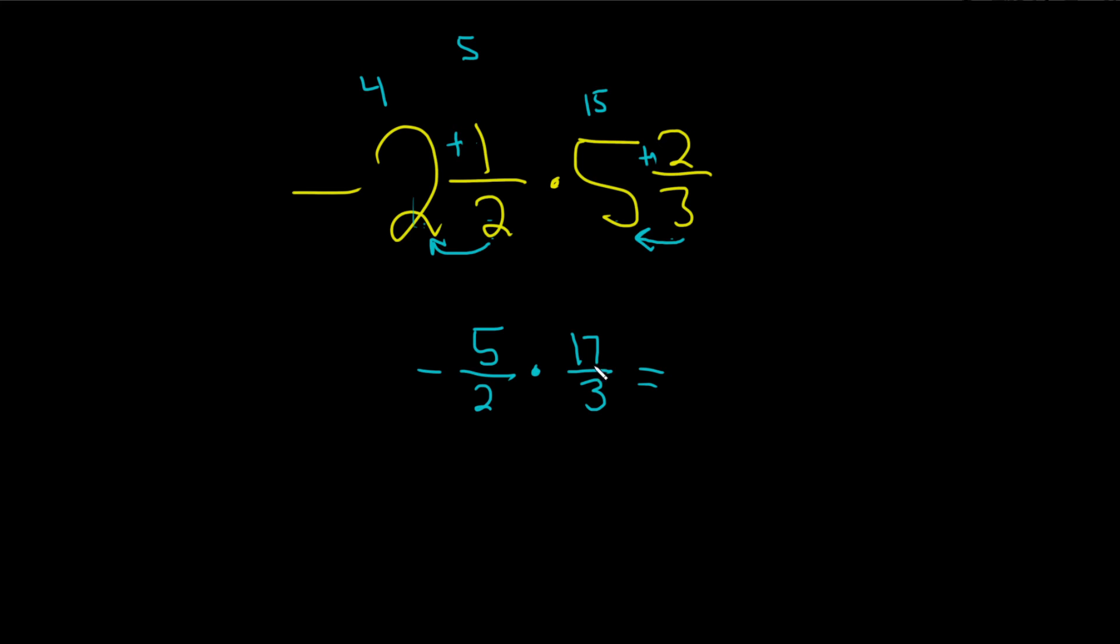So 5 times 17, yikes. How do you do that? Well, the way I do it is a little bit weird. I say, okay, 5 times 10 is 50, right? And then we still have 7 more. So 5 times 7 is 35. So 35 plus 50 is 85.